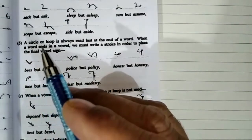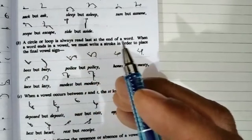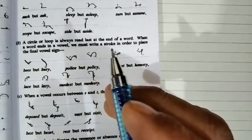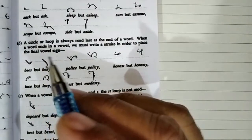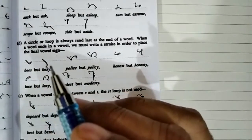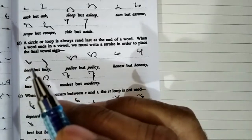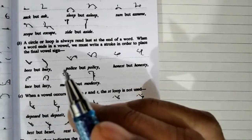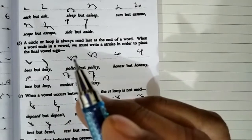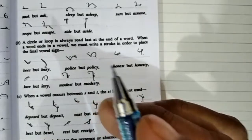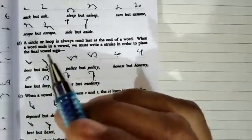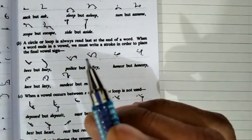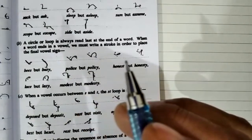Similarly, Rule B: A circle or loop is always read last at the end of a word. When a word ends in a vowel, we must write a full stroke in order to place the final vowel sign. For example, 'bees' — no vowel after the S, so circle is used. But 'busy' — a vowel follows, so the full outline is written. Similarly, 'policy' uses a circle, but 'policies' gets the full outline. Likewise, 'honest' versus 'honesty'.